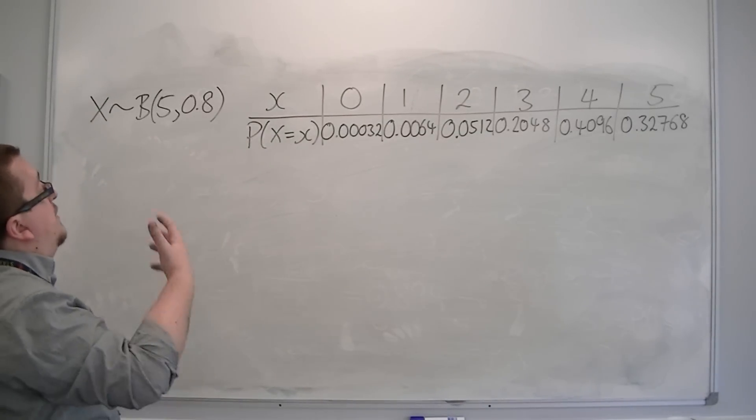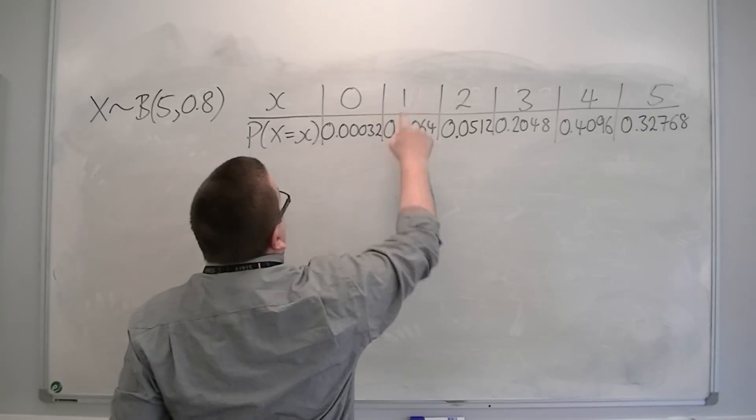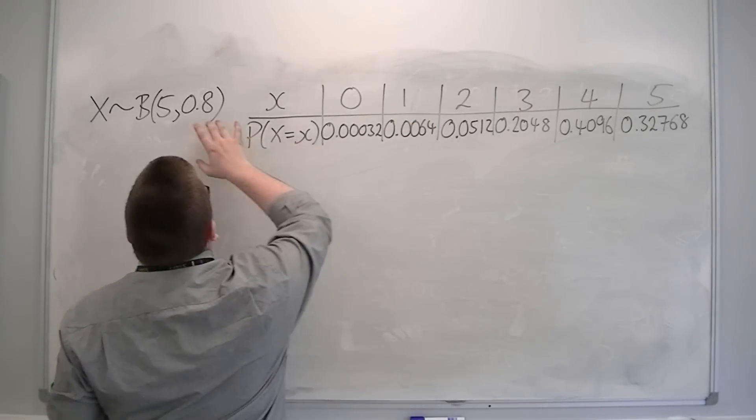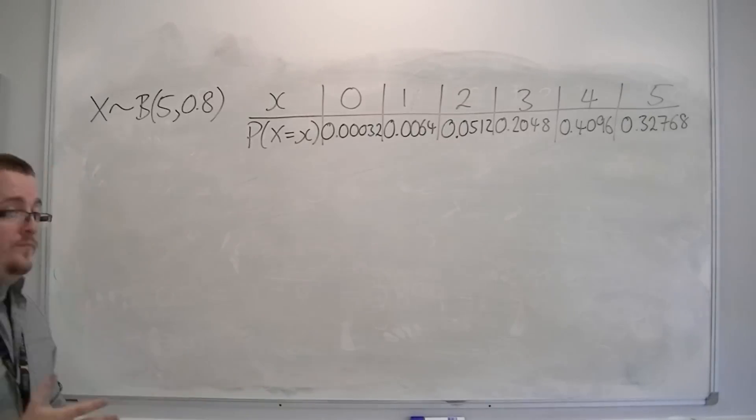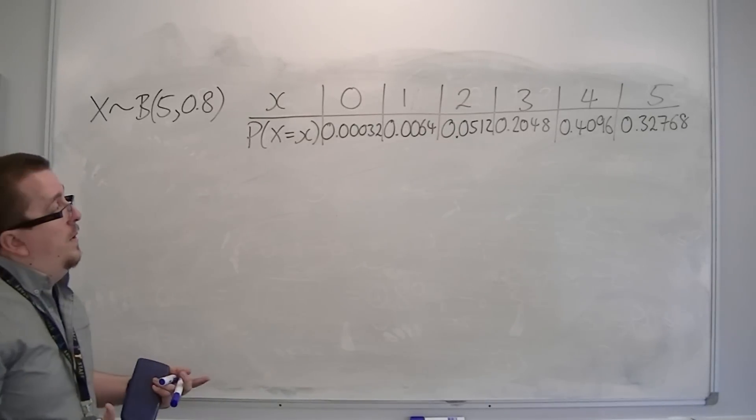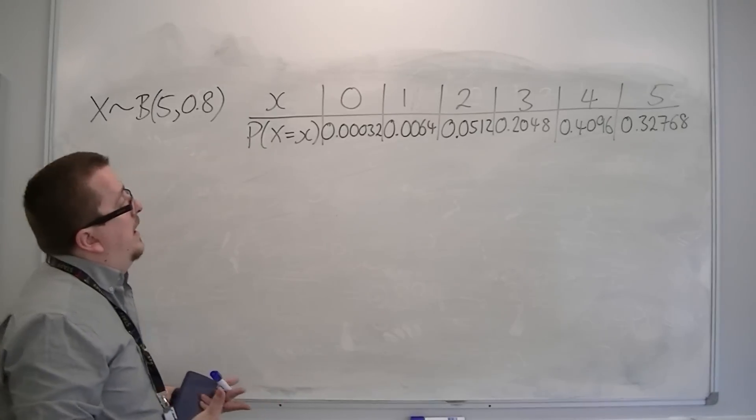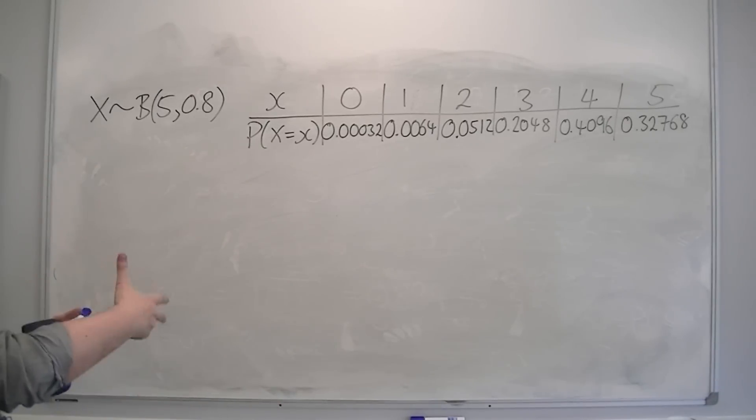For example, the probability of getting one success with a probability of 0.8 is 0.0064. That's just over half a percent.